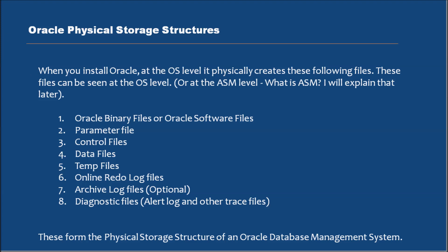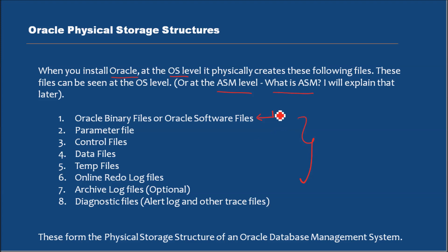So what is the physical storage structure? When you install Oracle Database, at the OS level — the operating system level — it physically creates certain files. These files can be seen at the OS level or at the ASM level. I will explain ASM later. First, as with any software when you install it, it copies the software files to whatever location you specify. When we install Oracle, it installs Oracle software files — these are called Oracle Binary files — and the location where they are stored is generally called Oracle Home.